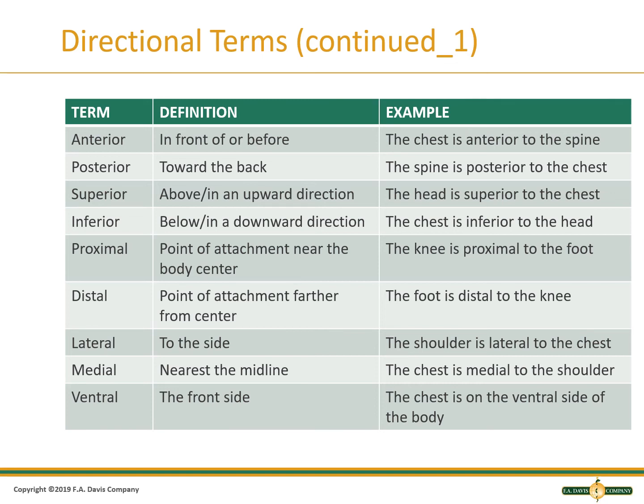Directional terms used in anatomy include: anterior, meaning the front of or before — for example, the chest is anterior to the spine. Posterior means towards the back — the spine is posterior to the chest. Superior means above, in an upward direction — the head is superior to the chest. Inferior means below, in a downward direction — the chest is inferior to the head.